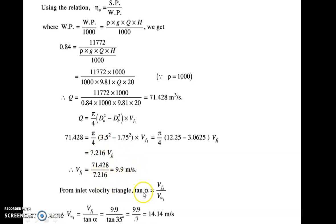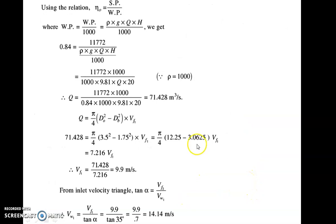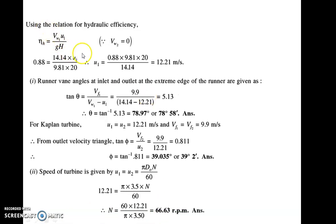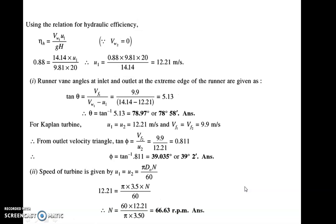Once you know Vf1, from the inlet velocity triangle, tan of alpha equals Vf1 upon Vw1. Alpha is 35 degrees and Vf1 is 9.9, so you can calculate Vw1, which comes as 14.14. Then hydraulic efficiency equals Vw1·u1 upon g·H. So 0.88 equals 14.14 times u1 upon 9.81 times 20, giving u1. With Vw1, u1, and Vf1 all known, tan of theta equals Vf1 upon Vw1 minus u1, and theta comes as 78.97 degrees.